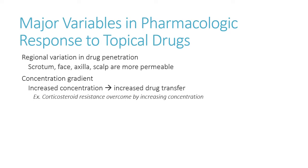We can have very variable absorption depending on where you place the drug. If you place drugs onto the axilla, the skin there is much thinner compared to, say, the bottom of your feet, so you're going to get better absorption. The thinner the skin, the more likely you are to see it being absorbed easily. Other things include concentration gradients — going back to Fick's law from pharmacodynamics, the bigger the concentration on the outside, the more it drives passive diffusion across that membrane. Bigger concentrations mean bigger drug absorption, and this is important when talking about steroids.